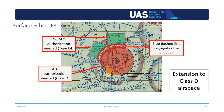Here's another example of an Echo 4 airspace extension. Again, the green-shaded areas represent Echo 4 area, while the red-shaded area in this image signifies a Class Delta airport, meaning that it has a control tower. Like the previous example, the key information is the segregating line — this time a dashed blue line — that segregates Class Delta airspace from the Echo 4 area. Operations in Echo 4 airspace do not require an airspace authorization.